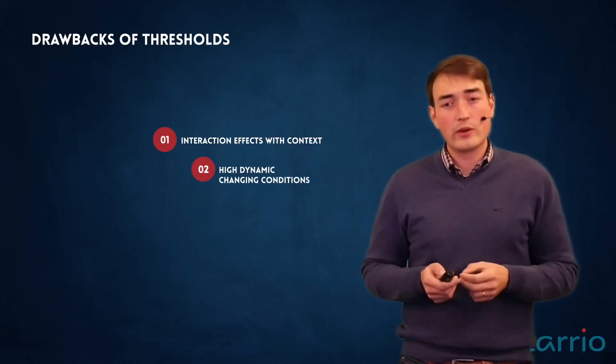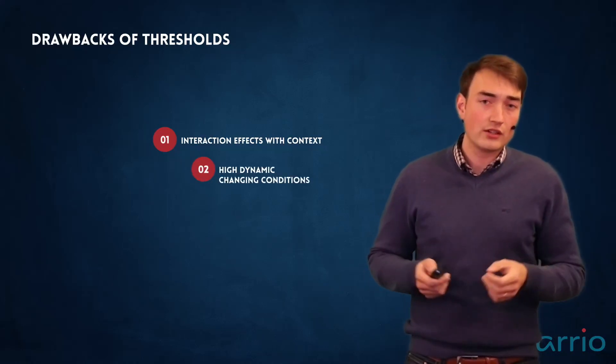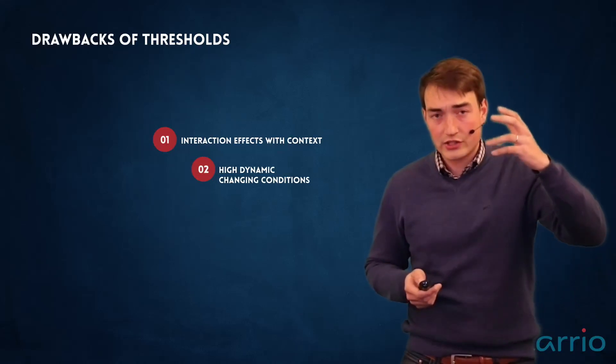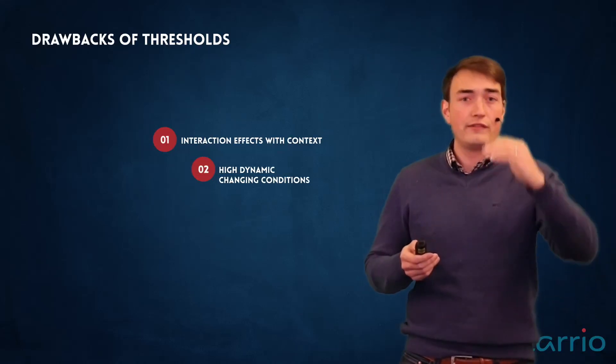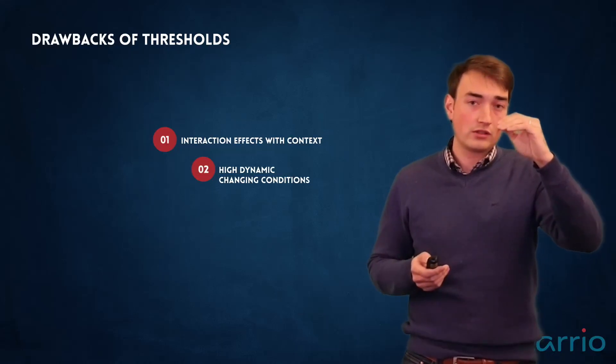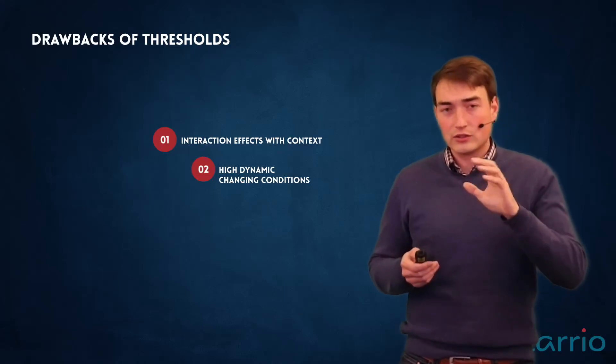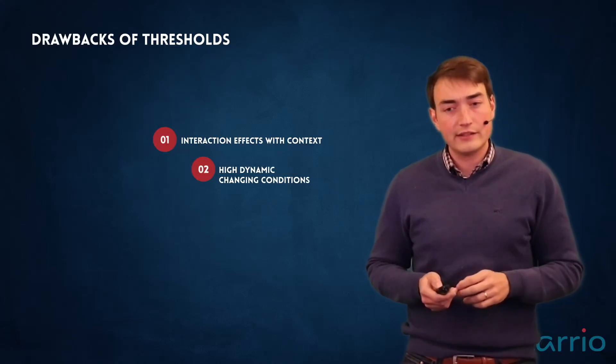The second one is we are in a high dynamic changing condition, so all of a sudden there can be a burst of messages. So it's very difficult to define a good threshold because sometimes it overshoots or undershoots a lot, so it's very difficult to have those thresholds clearly defined.